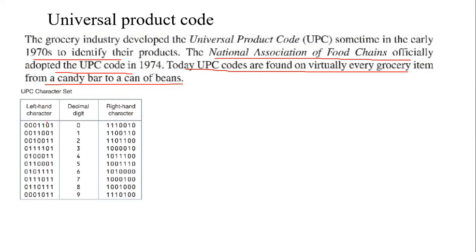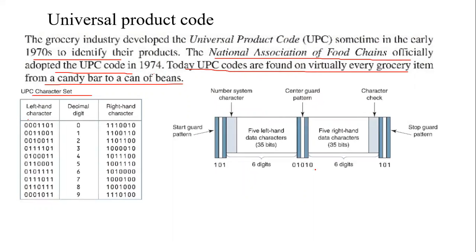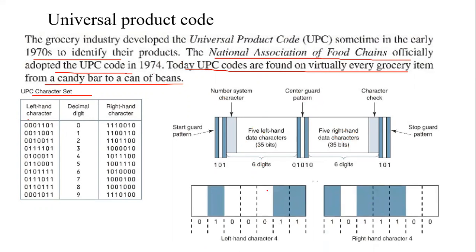The UPC code includes left-hand characters and right-hand characters. The structure includes 5 left-hand data characters at 35 bits, 5 right-hand data characters, and guard patterns on each side.